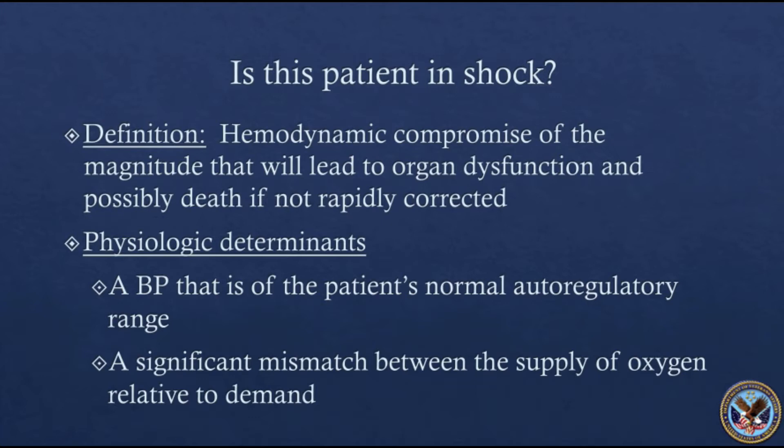There are two physiologic determinants of your progression to a shock state. The first is blood pressure, which needs to be within the patient's autoregulatory range. Some people are chronically hypertensive, so a normal blood pressure for you might be totally abnormal for your patient. But the other component that's more hidden is a significant mismatch between the supply of oxygen relative to demand.